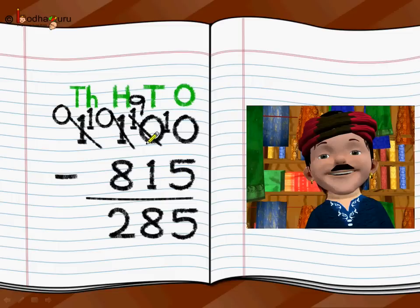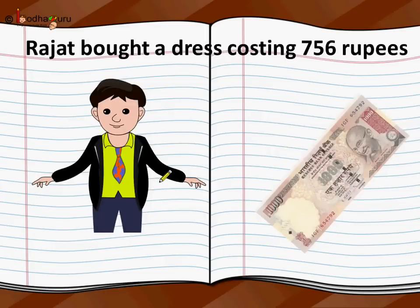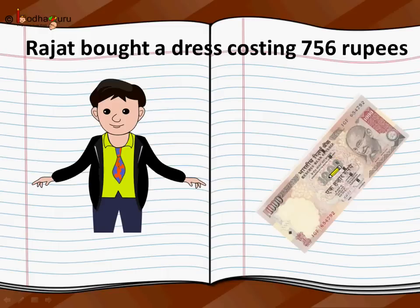We did this by subtracting 2 single digits at a given point in time, starting from ones position and moving left. Let's take another problem. Rajat bought a dress costing 756 rupees and gave 1000 rupees to the shopkeeper. How much should the shopkeeper return? We do subtraction: the shopkeeper will calculate 1000 minus 756.